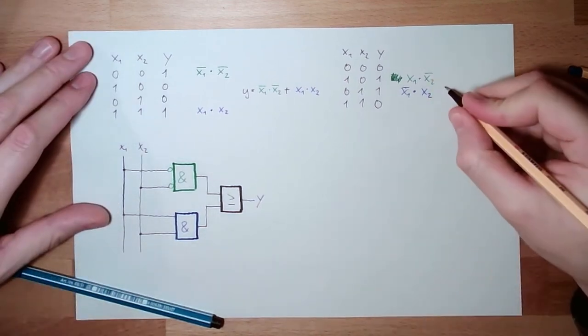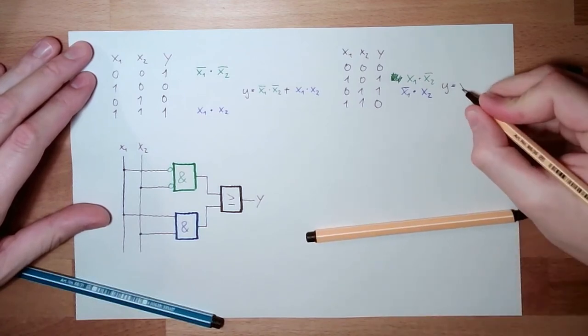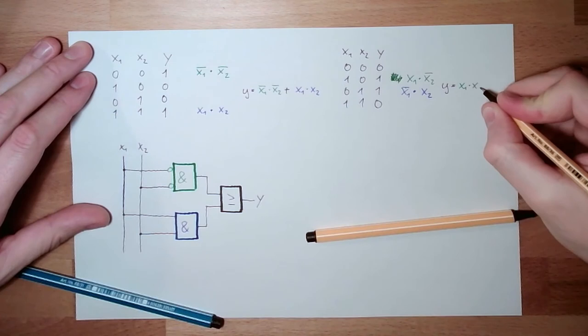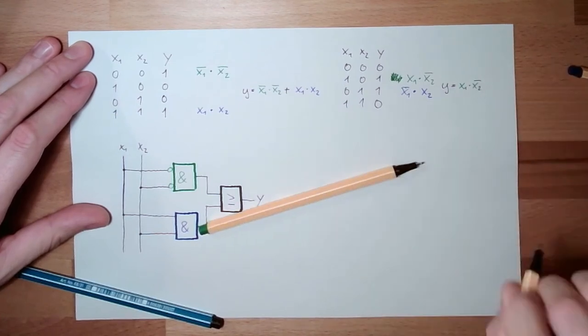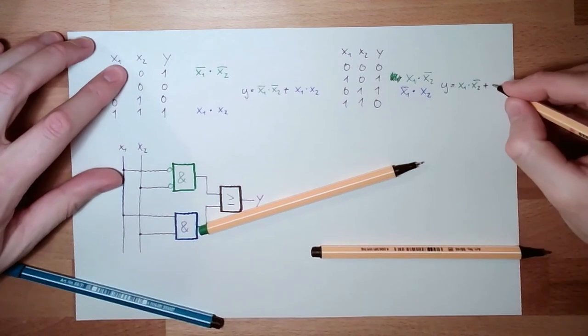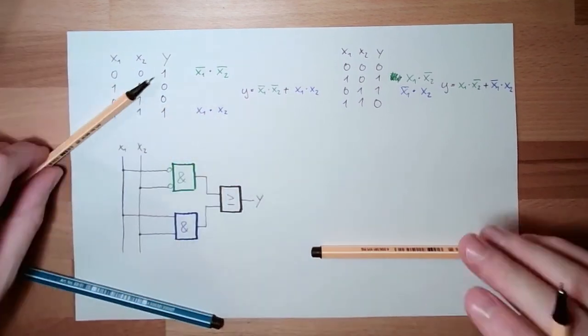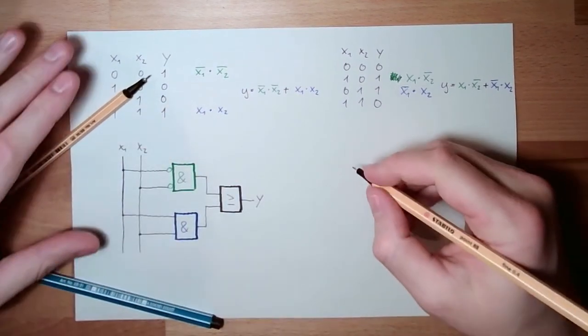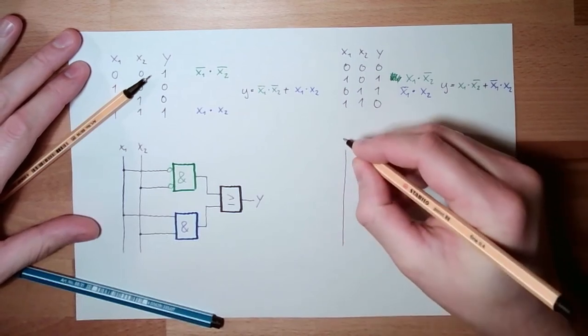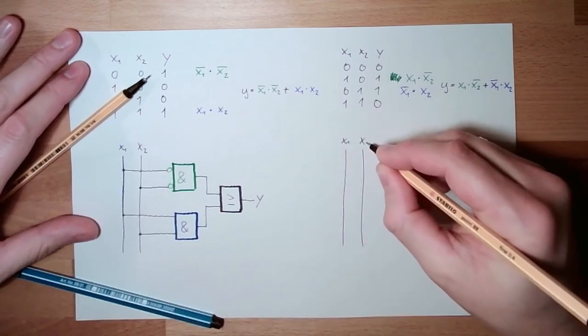So my Y is NOT X1 and X2 or NOT X1 and X2. Let's transfer this into a circuit, logic circuit. NOT X1, X1, X2. There must be an AND.